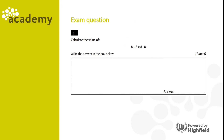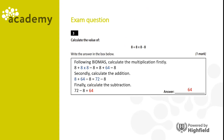Another exam-style question: calculate the value of eight plus eight times eight minus eight. Pause the video and have a go. The answer is sixty-four. Following BIDMAS, calculate the multiplication first: eight times eight is sixty-four. Then the addition: eight plus sixty-four is seventy-two. Finally, the subtraction: seventy-two minus eight is sixty-four.